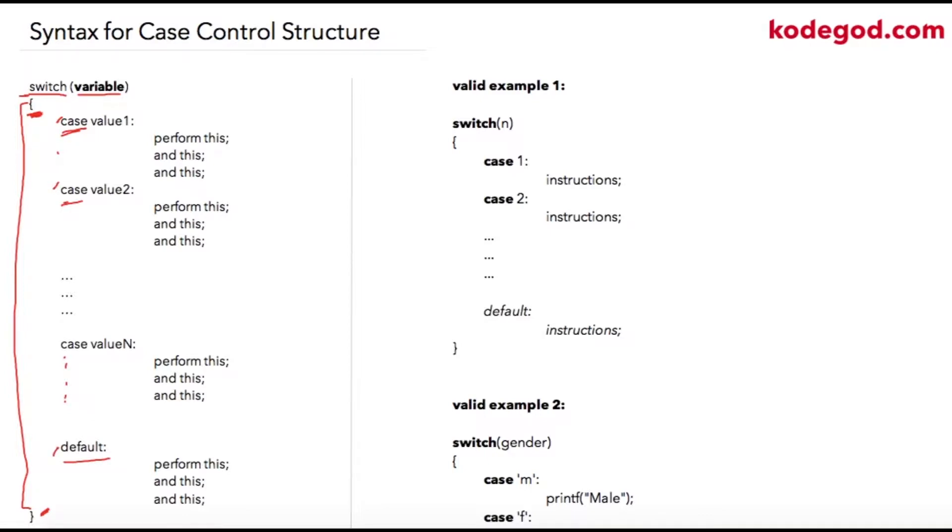Typically when a particular case is evaluated to be true, that case block is executed. If the case does not match anywhere with the variable, then the default case is executed. So let us take a valid example assuming a value.